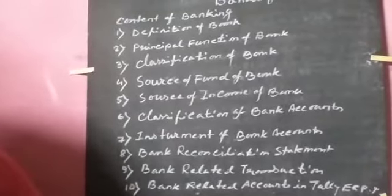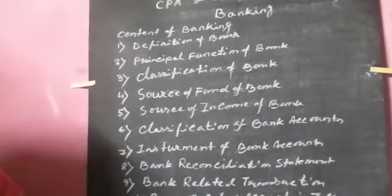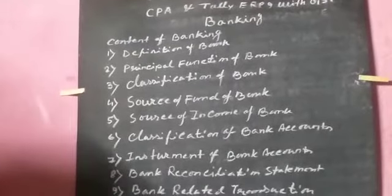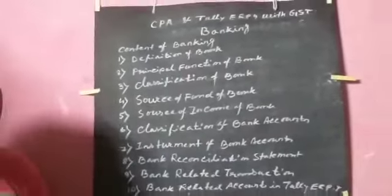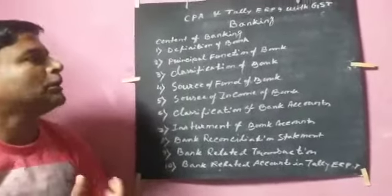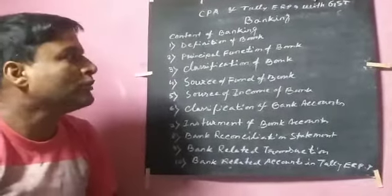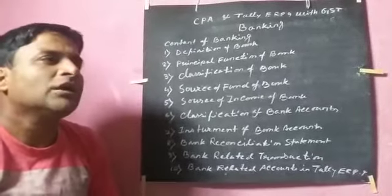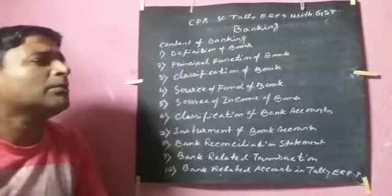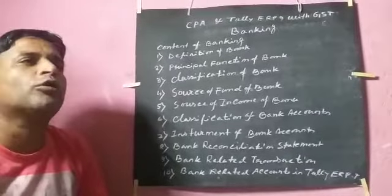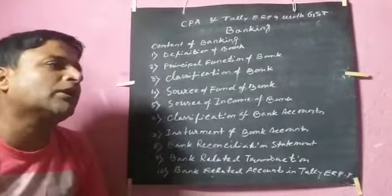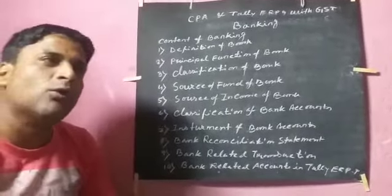And last — bank related accounts in Tally ERP 9 — इसका मतलब है Tally ERP 9 में हम bank related accounts को कैसे maintain करना है, वो step by step देखना है। यह जो banking है, company के लिए very important चीज़ है — इसलिए जो company का जितना supplier है और customer है, अगर bank के through उनका payment और receipt लिया है।